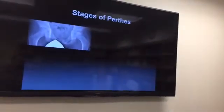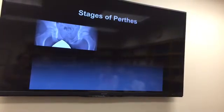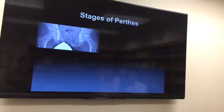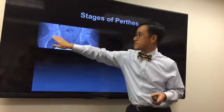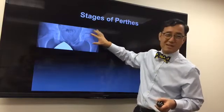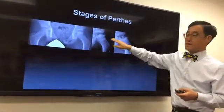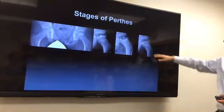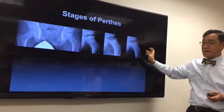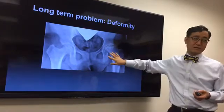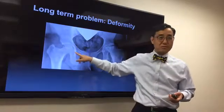On screen we can see an early initial stage X-ray where the femoral head appears slightly flatter compared to the normal side — subtle at first. Over time it degenerates, becomes fragmented and flattened. It then starts to regrow, but sometimes it heals in a very deformed shape. A deformed hip like this will not function well over time compared to a normal, round femoral head.